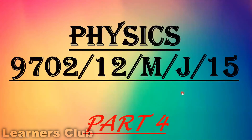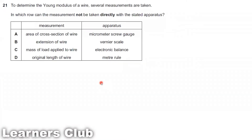Part 4, May-June 2015, Paper 12, Question 21. To determine the Young modulus of a wire, several measurements are taken. In which row can the measurement not be taken directly with the stated apparatus? To determine the Young modulus we need the force applied, the original length, the cross-sectional area, and the extension of the wire.